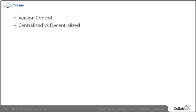Second, we want to talk about the two ways that a version control tool can be deployed or implemented: centralized, which is what the traditional tools have done, versus decentralized, which is what Git is going to do, which is quite different. So we want to understand that difference.